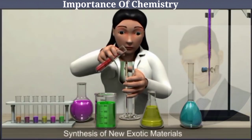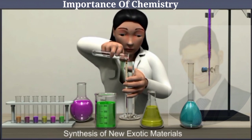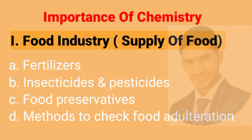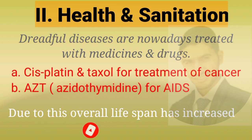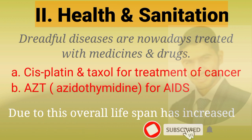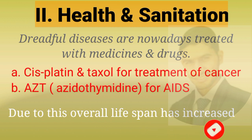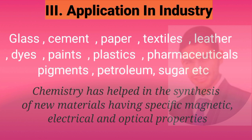Different exotic materials are synthesized in the laboratory nowadays. The first importance is in the food industry: chemistry has given us fertilizers, insecticides, pesticides, food preservatives, and methods to check food adulteration. Second is health and sanitation: dreadful diseases are now treatable with medicines like cisplatin and taxol for cancer, and azidothymidine for AIDS.